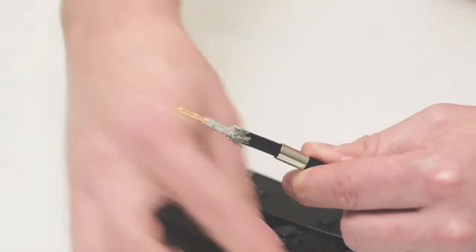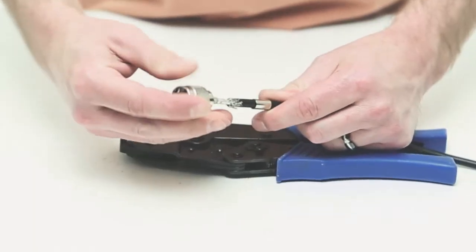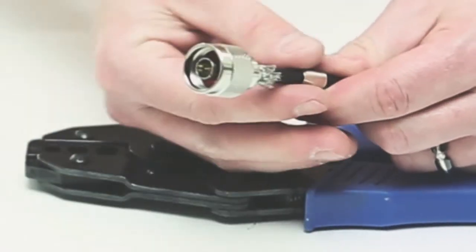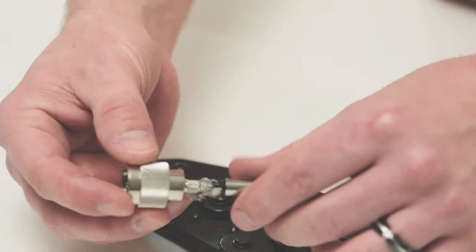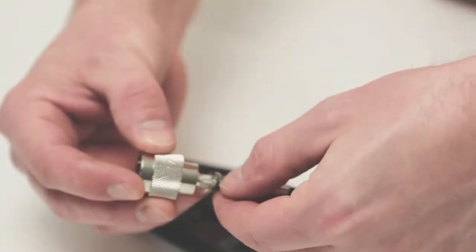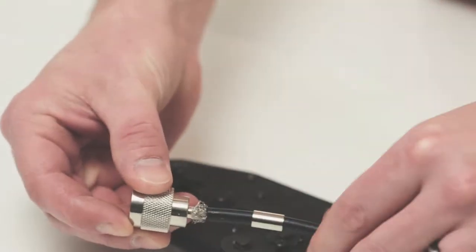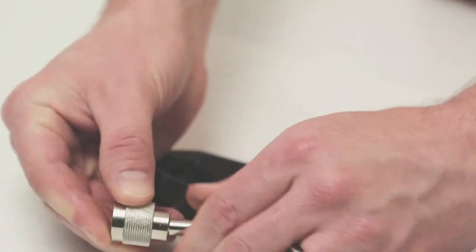Next, insert the pin on the center conductor. Slide the connector housing onto the conductor, making sure to push it all the way down so that the pin goes through. Slide up the braid and the ferrule, and you're ready to crimp.